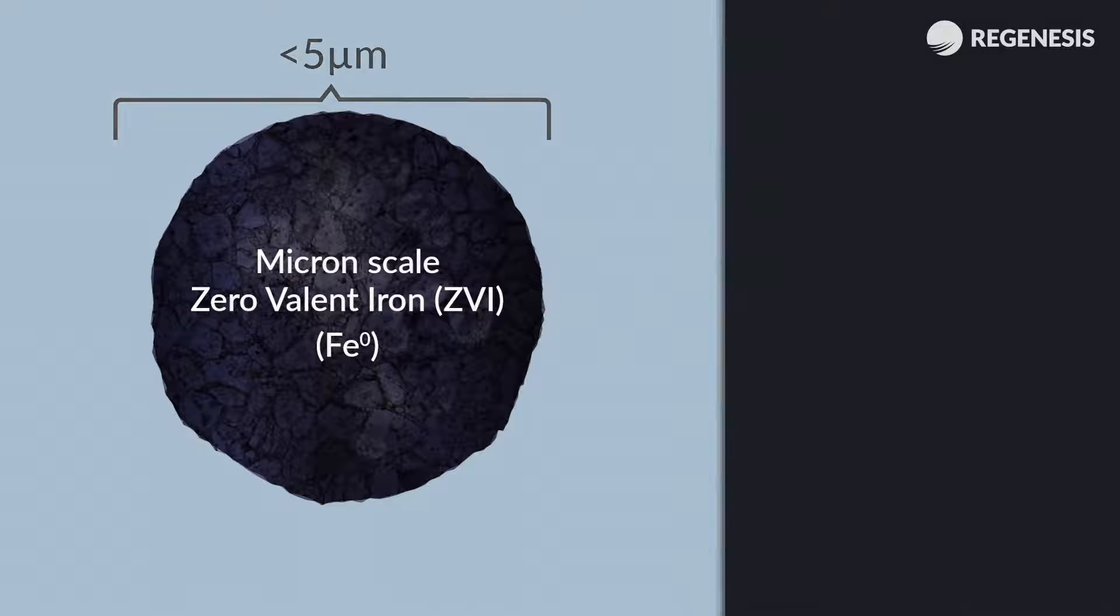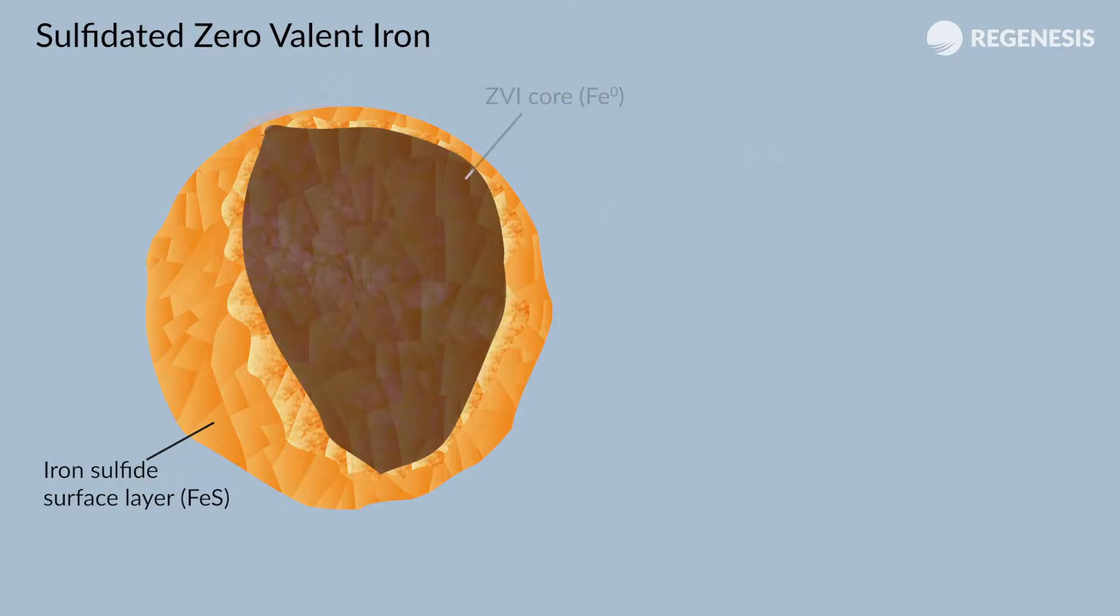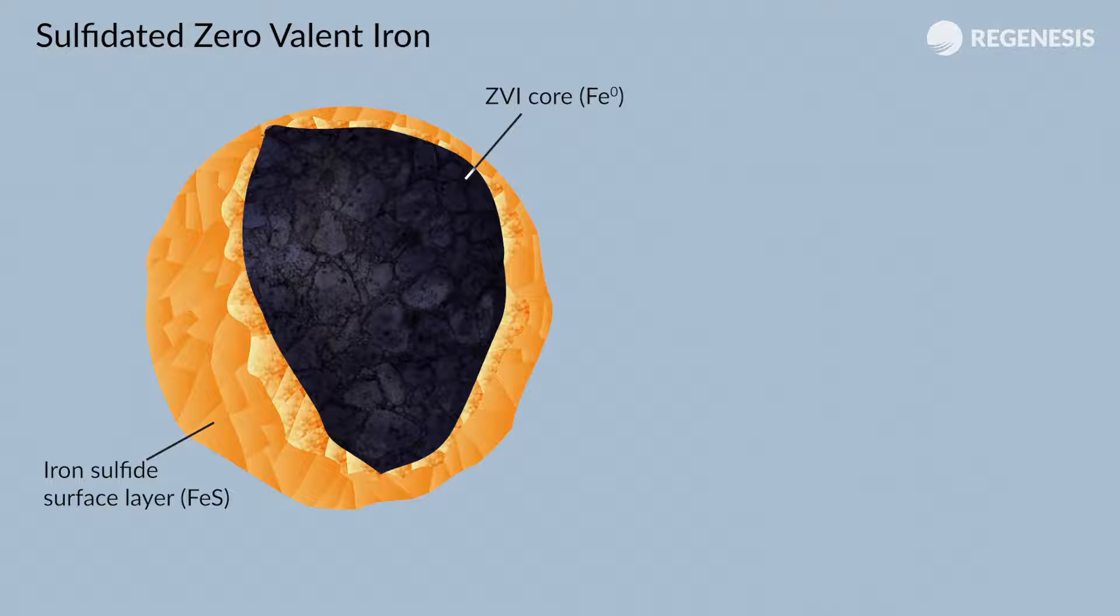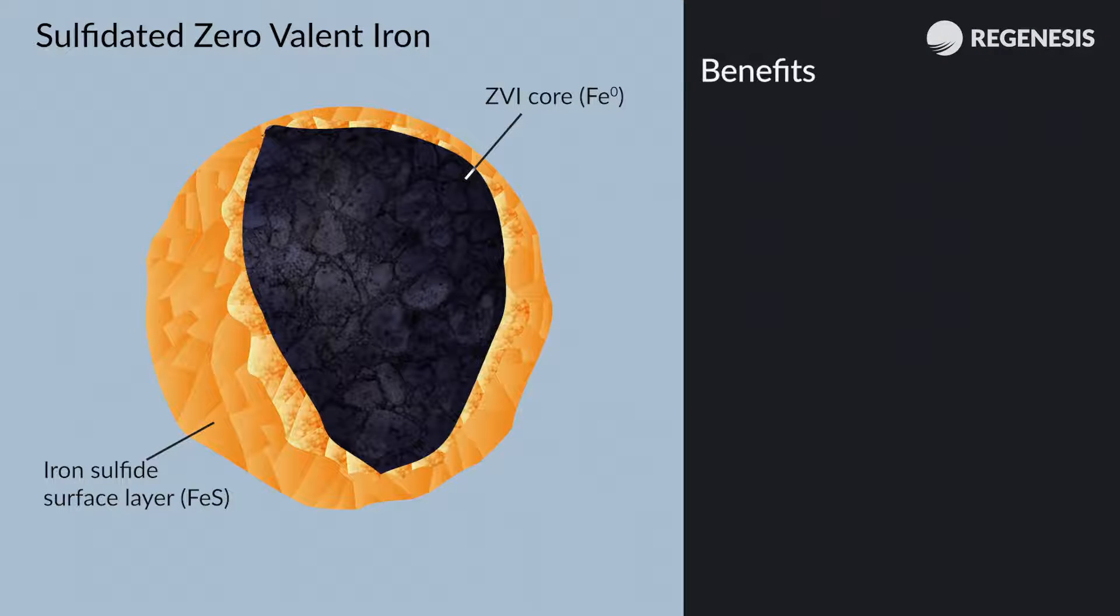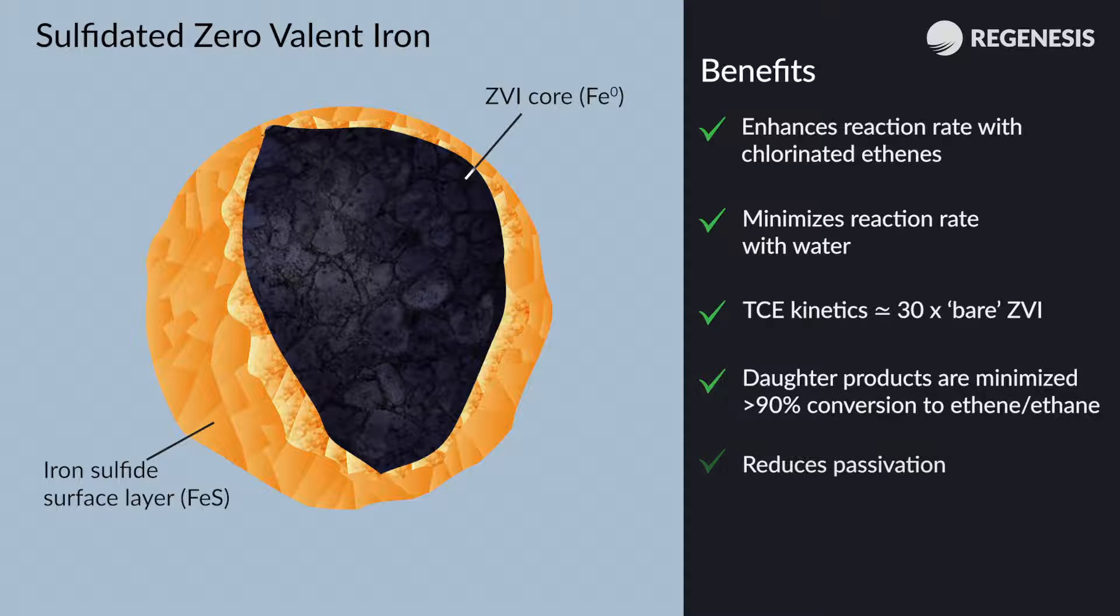Each individual particle is coated with a thin iron-sulfide layer, providing several benefits to the treatment process. Sulfidation enhances reactivity with chlorinated ethenes, minimizes passivation through reaction with water, and enhances persistence of the treatment.